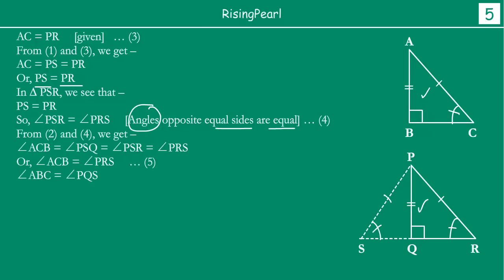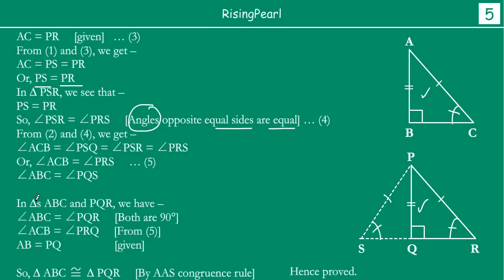Now comparing triangles ABC and PQR: angle ABC equals angle PQR (both 90 degrees); angle ACB equals angle PRQ (just proved); and AB equals PQ (given). So in these two triangles, two corresponding angles are equal and one side is equal. Therefore, triangle ABC is congruent to triangle PQR by the AAS (Angle Angle Side) congruence rule. This completes the proof of the RHS congruence rule.